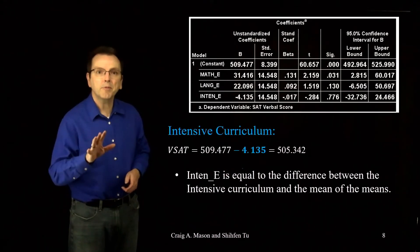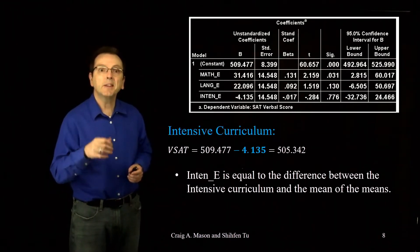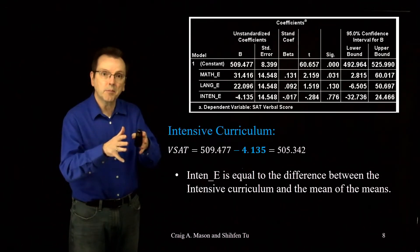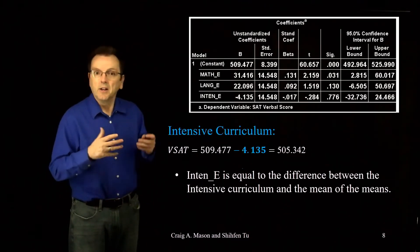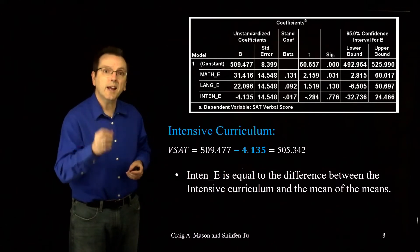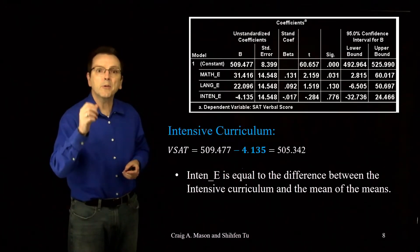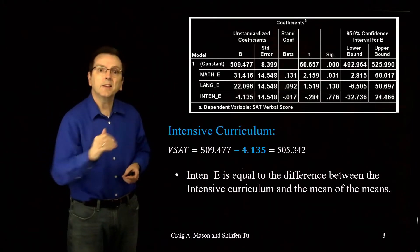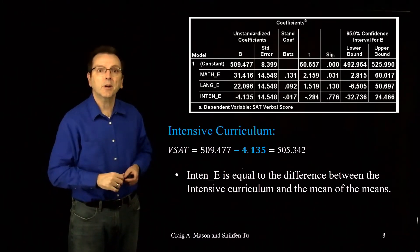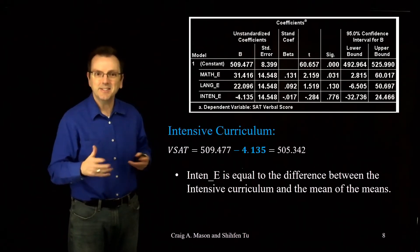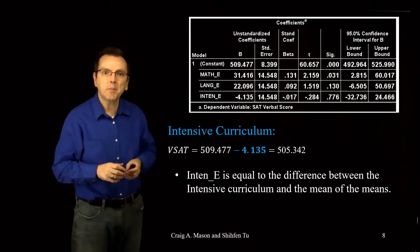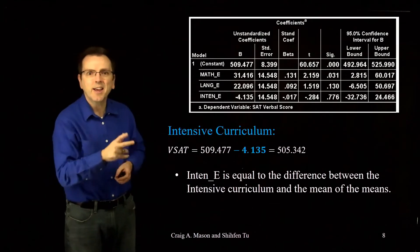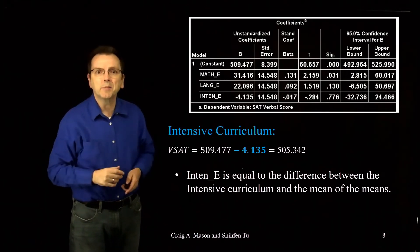Now, just like before, we interpret the value of the coefficient for the effect code as being the difference between the intensive curriculum group and the mean of the means of all the different curricula. So, it tells us that the mean for those in the intensive curriculum was 4.135 points lower than the mean of the means of all of the different curricula. But, that's not very much. Yes, it's the difference we see in our sample. But, maybe there's no difference out in the population. And, this minor difference is just random sampling noise.